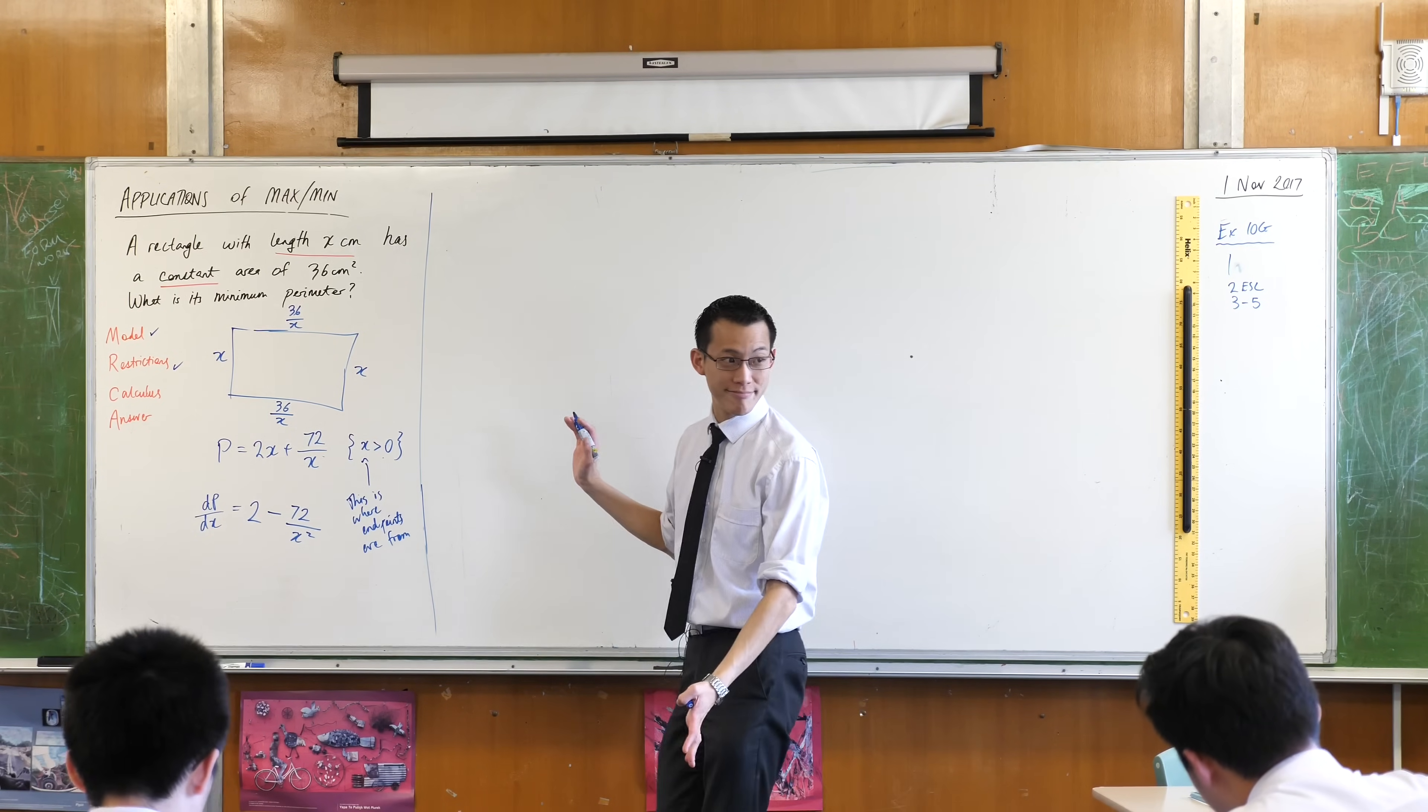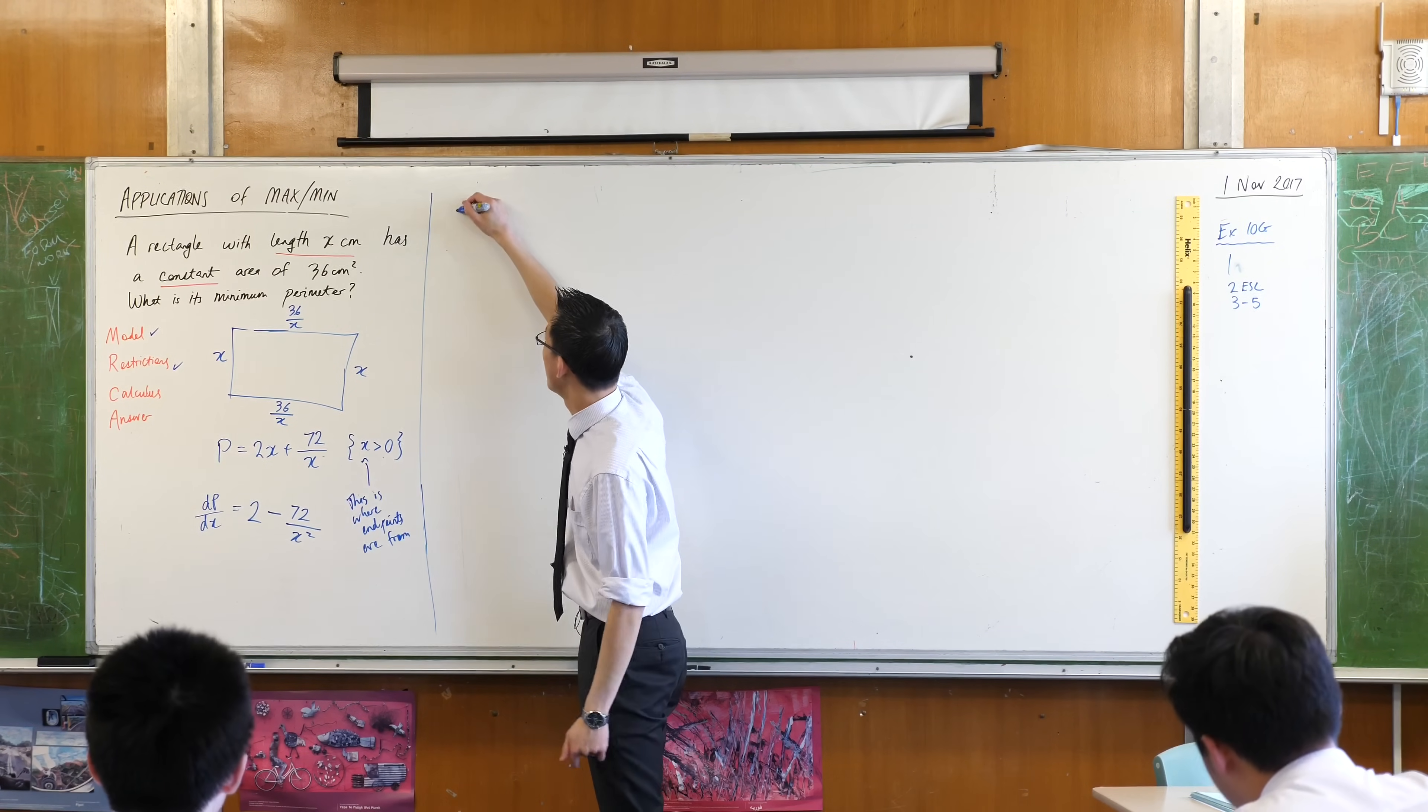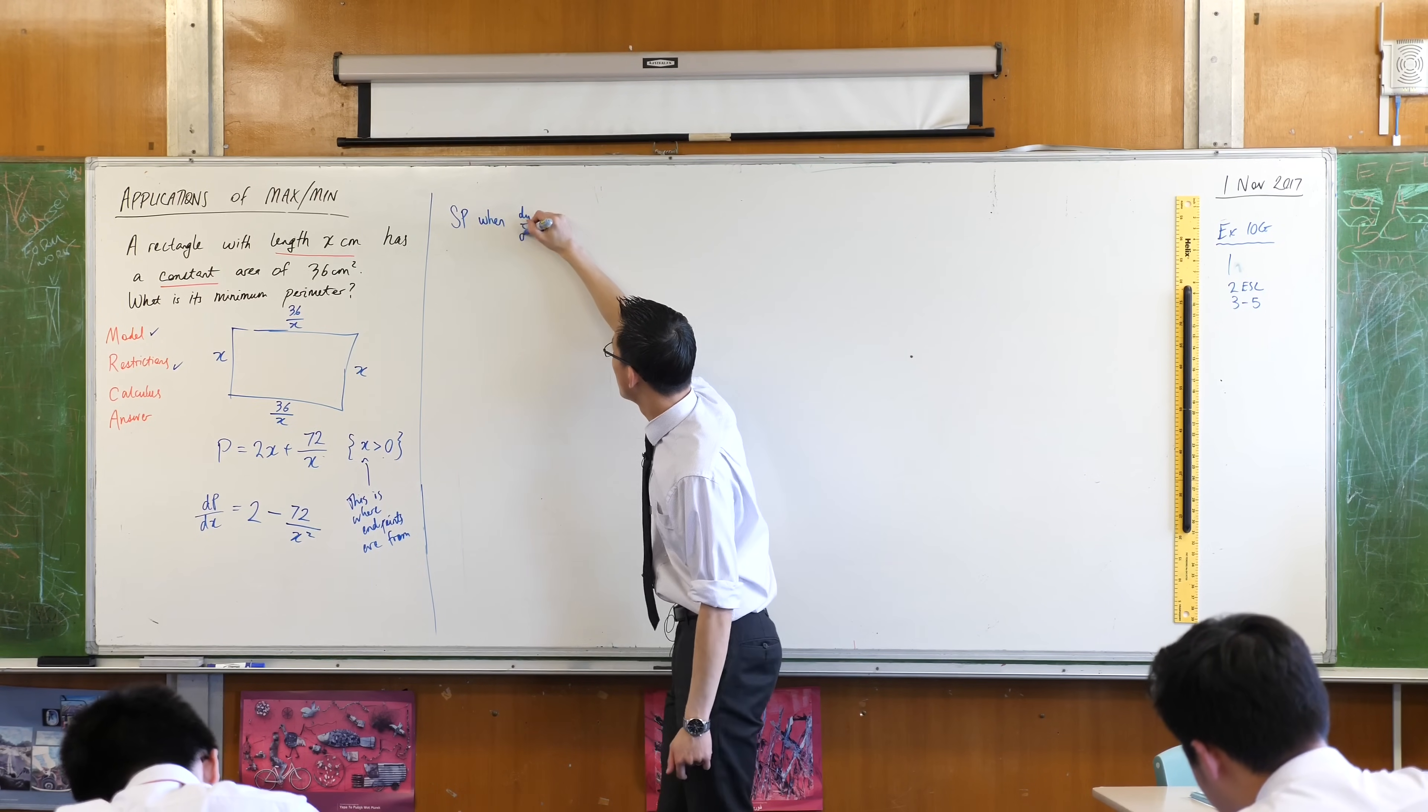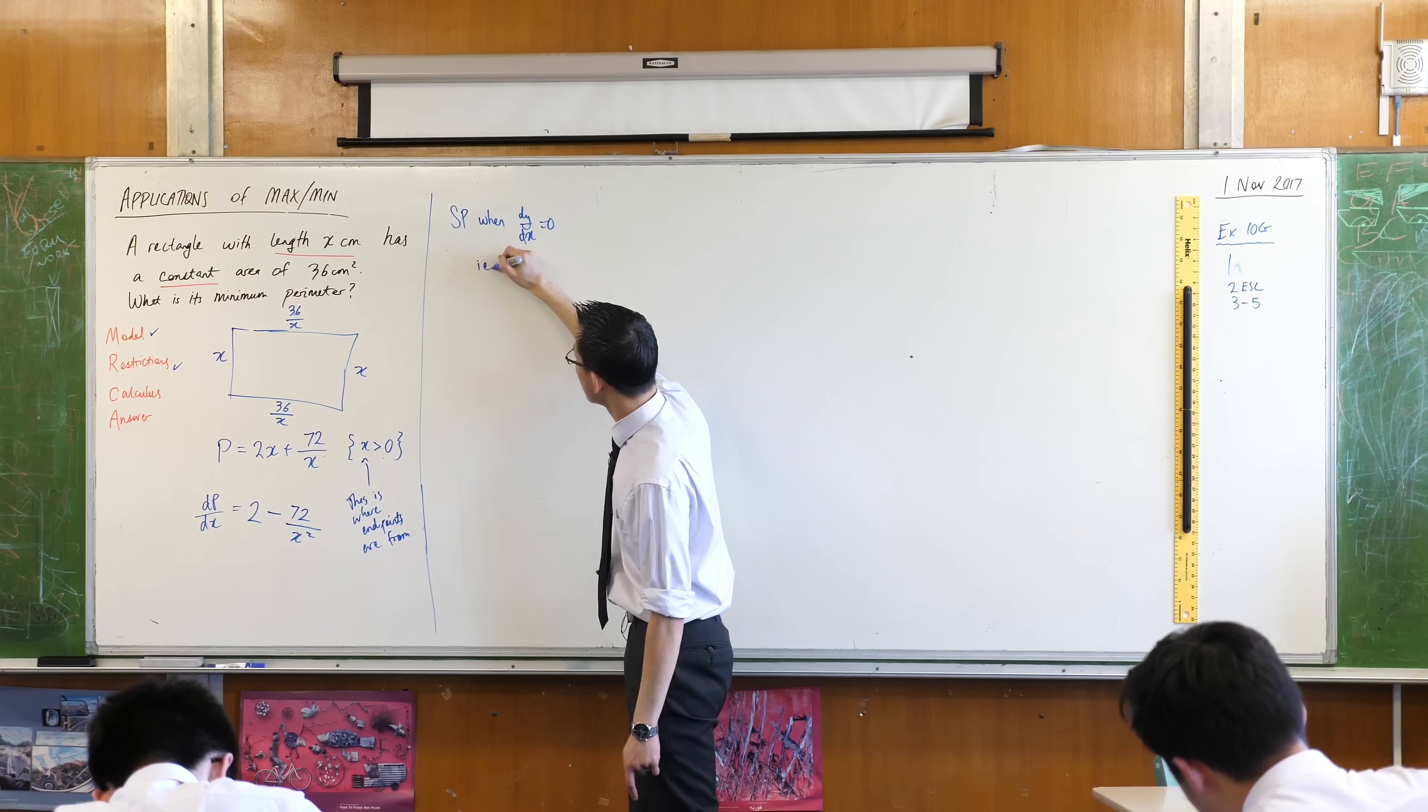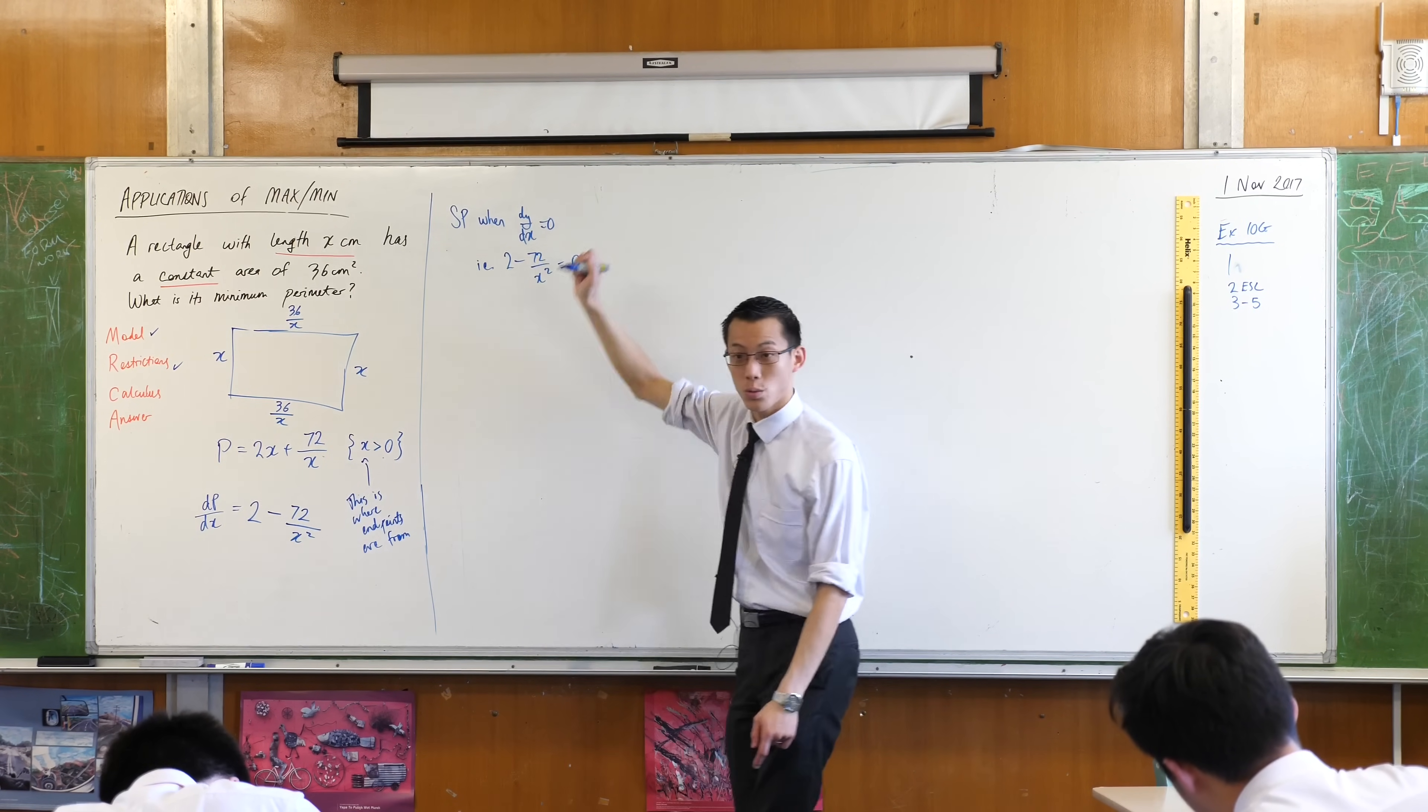Stationary points exist when the first derivative is equal to zero. So let's go ahead and do that. Stationary points when the first derivative is equal to zero. That's this: 2 minus 72 on x squared equals zero.